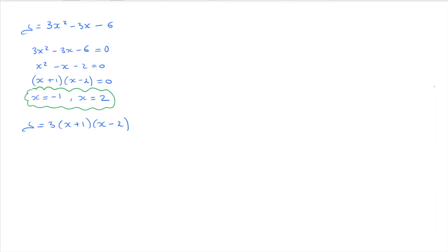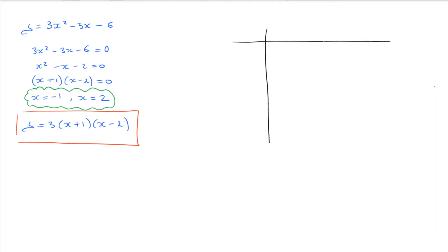Now that we have the root-factored form, we use it to create the sign table, starting exactly as before. We write x in the upper left-hand corner, and we're studying over all real numbers — from negative infinity to positive infinity. The quadratic equals zero at x equals negative 1 and x equals 2, so we add those to our table and add vertical lines below those two values to create the columns. Now we study the sign of each factor.